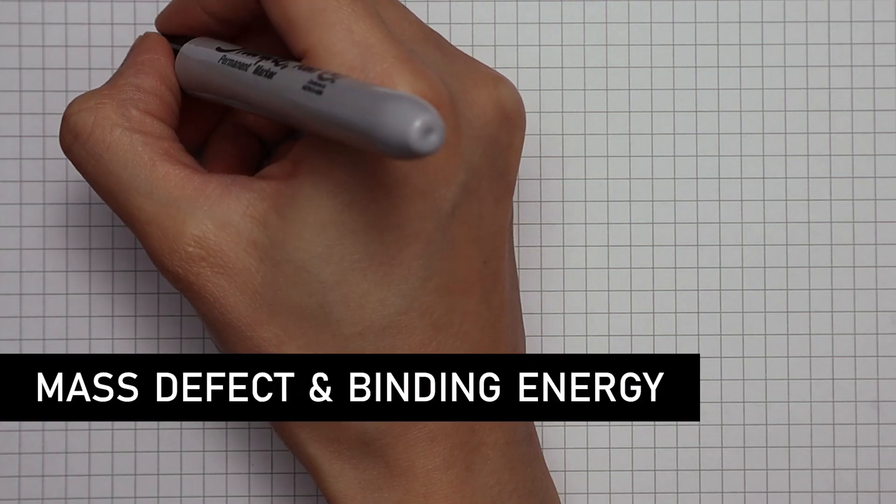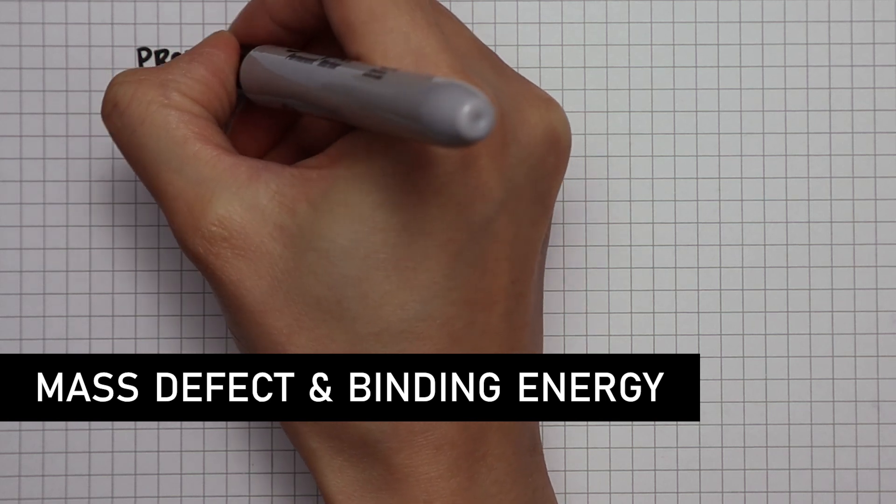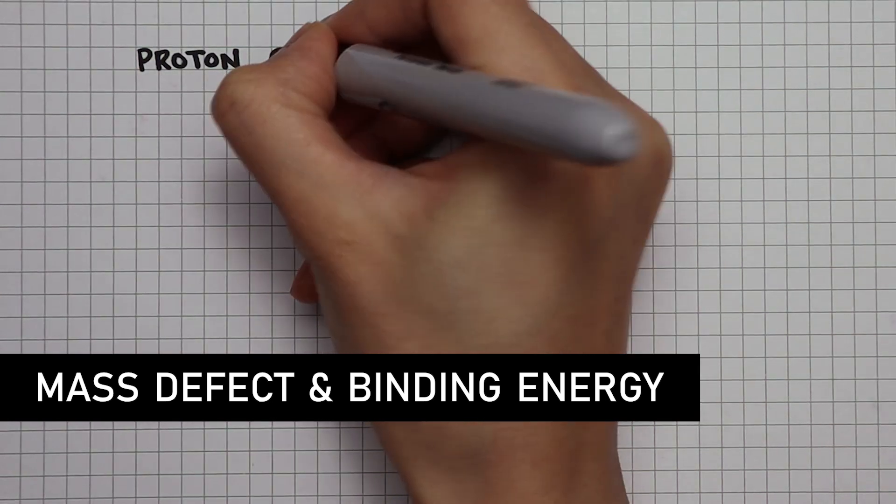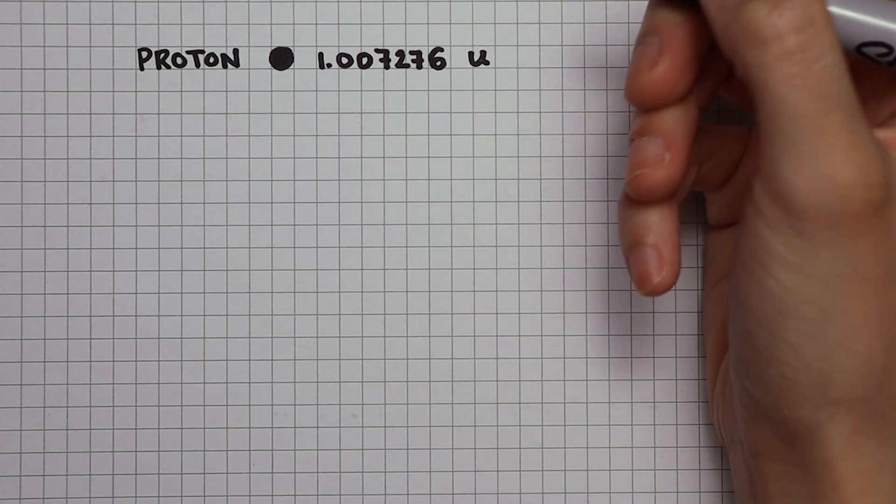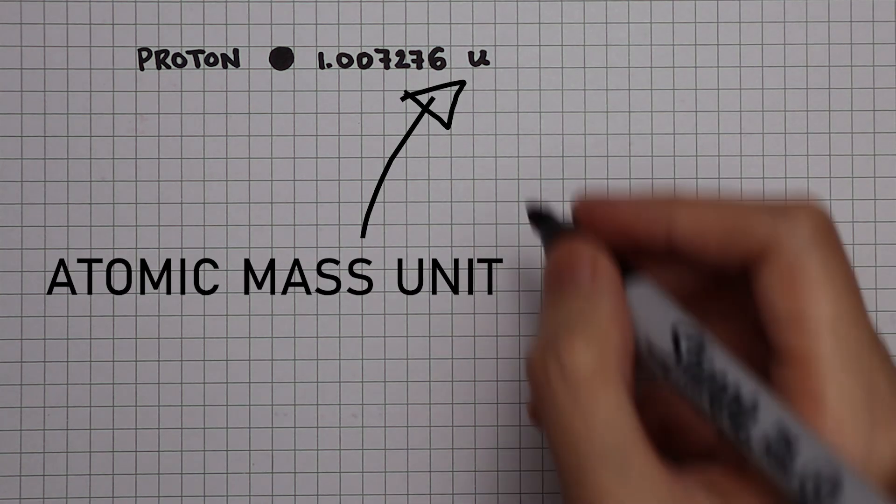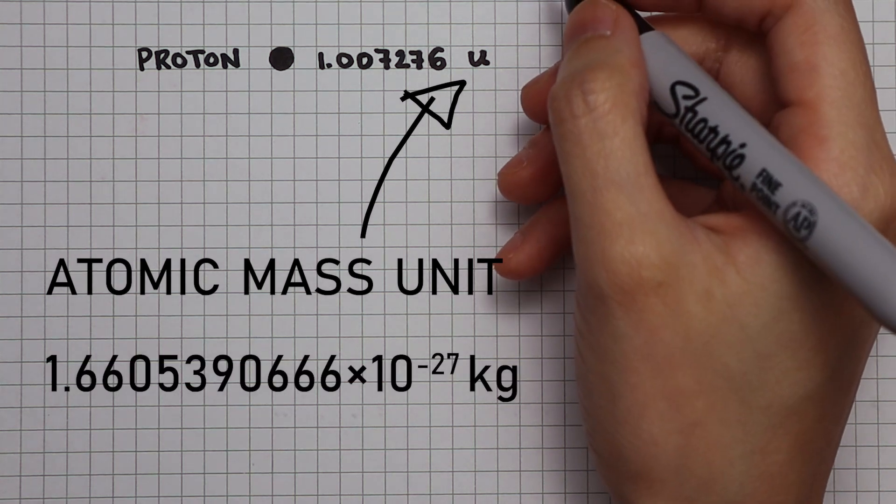But this same idea cannot be applied to subatomic particles. Measuring the mass of a proton, I get 1.007276u, where u is the atomic mass unit, which is a very small unit of mass.